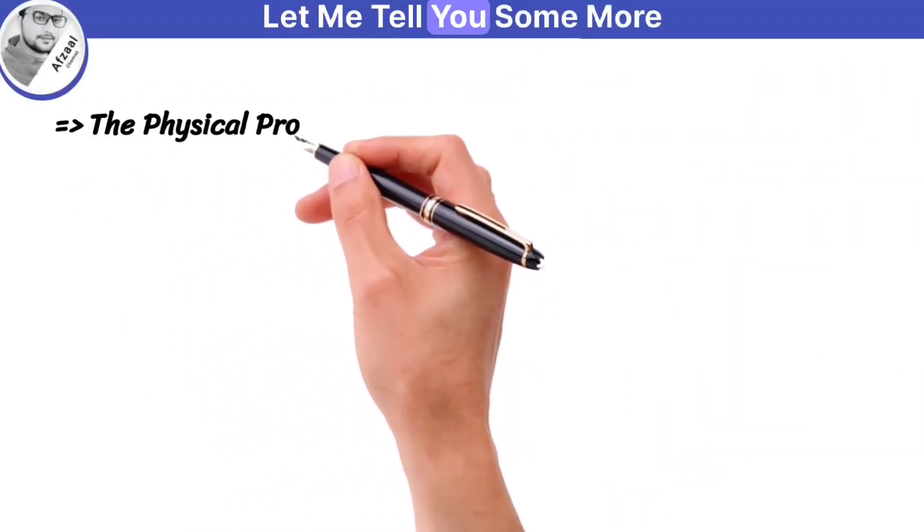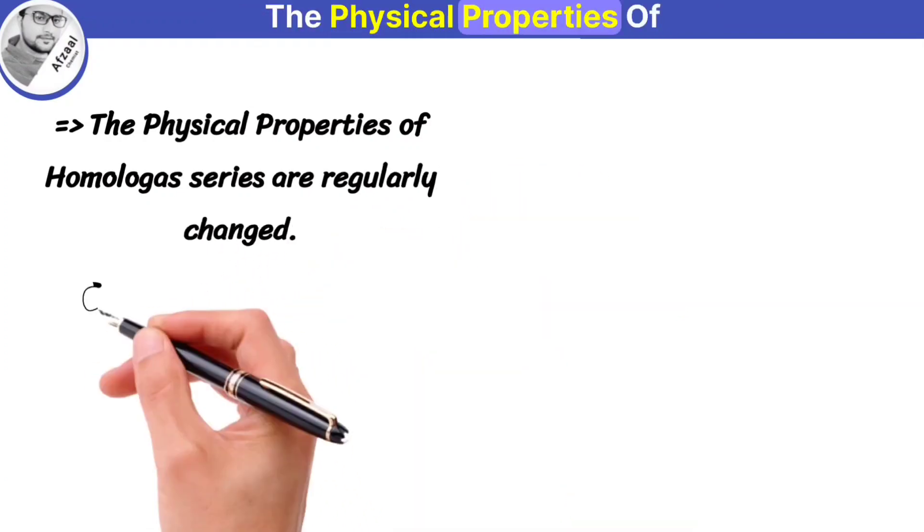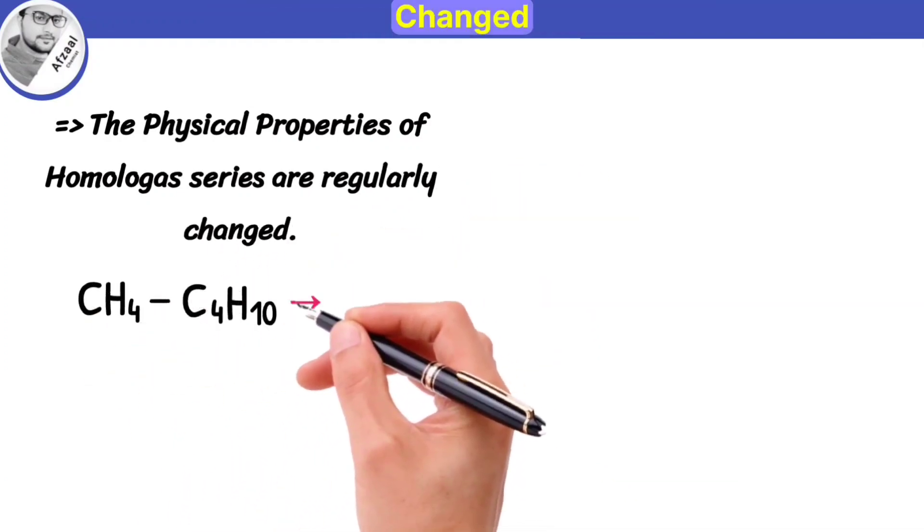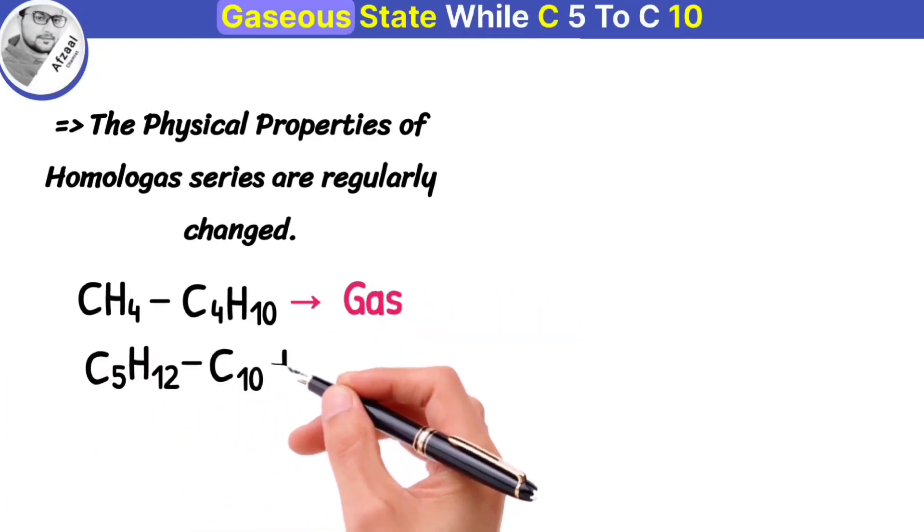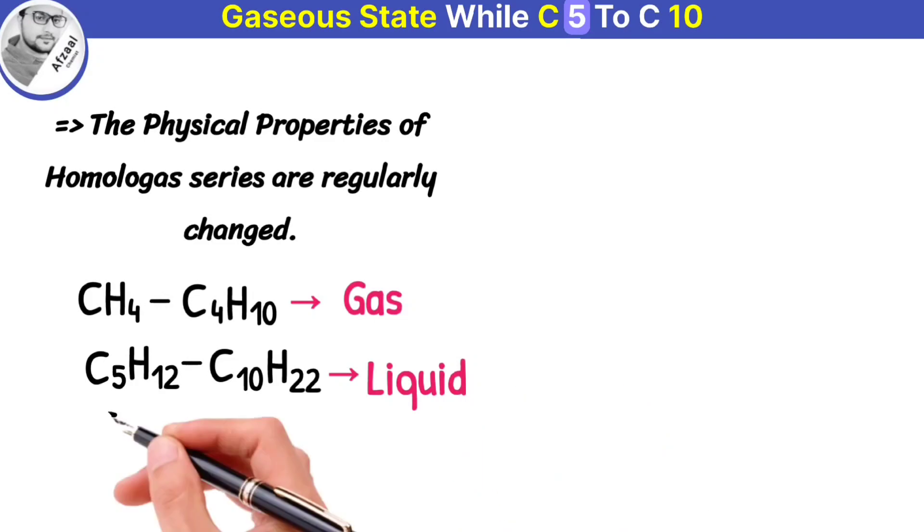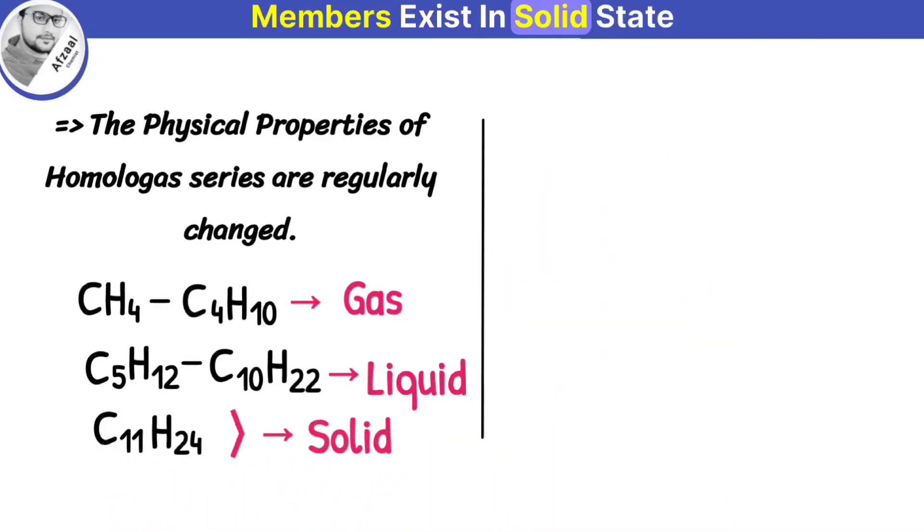Let me tell you some more properties of homologous series. The physical properties of homologous series are regularly changed. For example, C1 to C4 compounds exist in a gaseous state, while C5 to C10 exist as liquids, and higher members exist in solid state.